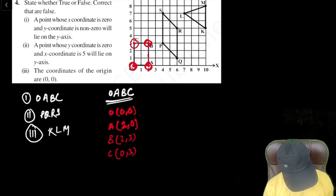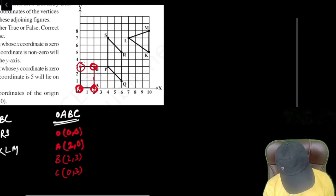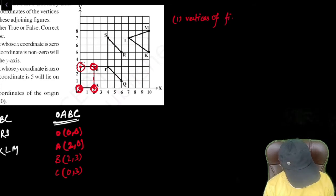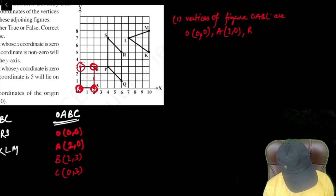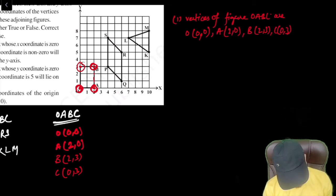So if I write the first question, so first answer: vertices of figure O, A, B, C are O (0, 0), A (2, 0), B (2, 3) and C which is (0, 3). So this is the first answer.